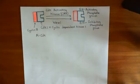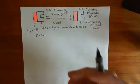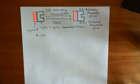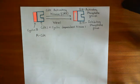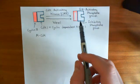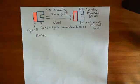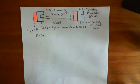When we move from G2 to M phase, the levels of M CDK go up. What happens is you get a positive feedback: once you have formed some active M CDK, it then starts positively feeding back on itself. This will be shown in the next video.